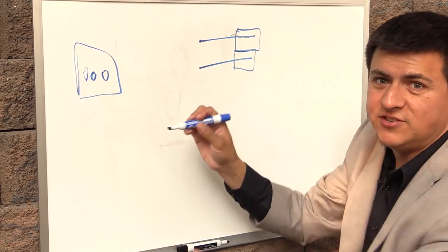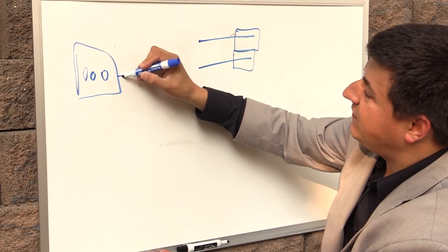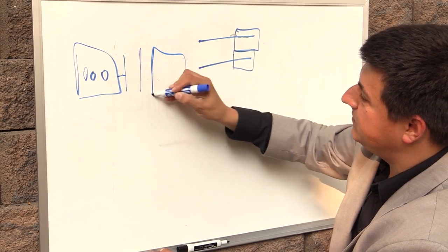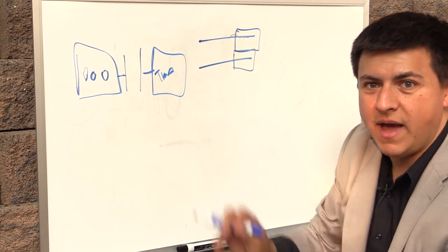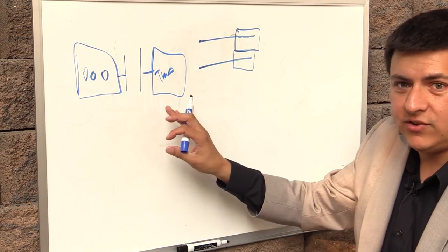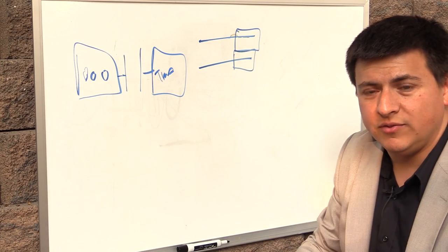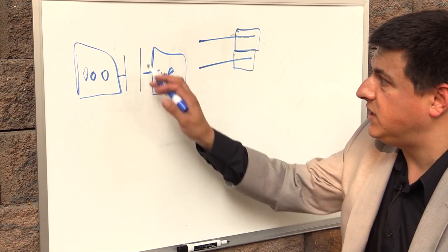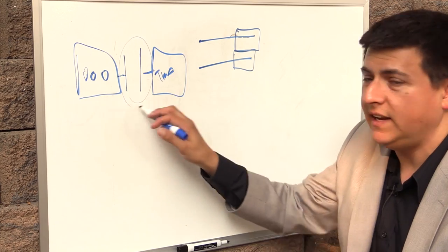And then we have a clutch that connects the engine to the transmission. So we don't have a torque converter. This is the primary reason that dual clutch transmissions are more efficient than traditional automatics is because we don't have this torque converter sucking up things.